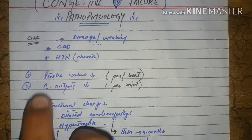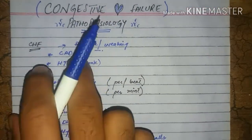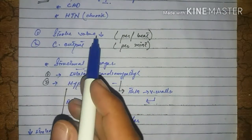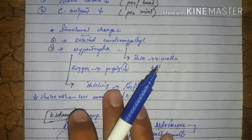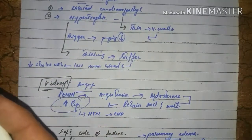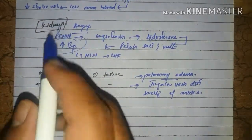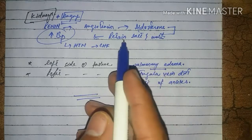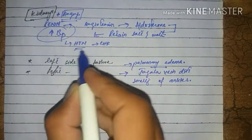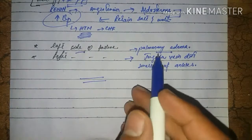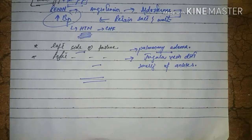In summary, congestive heart failure involves damage or weakening of the heart muscle due to coronary artery diseases or hypertension, causing decreased stroke volume and cardiac output. The heart tries to compensate through structural changes leading to CHF. The kidneys release renin, stimulating angiotensin and aldosterone, retaining salt and water, increasing BP, and worsening CHF. Left-sided failure causes pulmonary edema; right-sided failure causes jugular vein distension and ankle swelling.